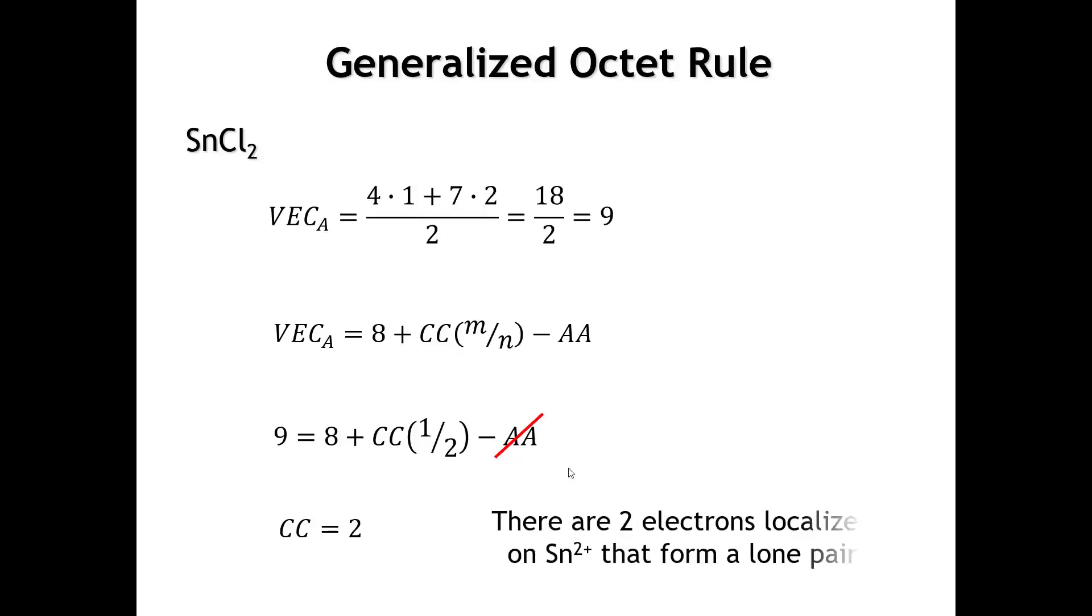All right. Let's start with tin chloride. So if we calculate the valence electron count per anion, tin has four valence electrons. Chlorine has seven. And so we come up with the valence electron count per chloride of nine electrons. Because that's larger than eight, the chloride atoms cannot accept all of the electrons from tin. So we're going to go to our generalized 8-N rule here, plug in our numbers, and you can see now that we don't need any anion-anion bonds. So if we solve for CC here, it comes up to be two. So CC is the number of electrons that are left on the cation. So tin has two leftover electrons. And what happens in this case is those electrons on the tin go into a lone pair. So it's pretty common that when you have tin two plus, you might have a non-bonding electron pair on that tin two plus, and that's what happens in this case.